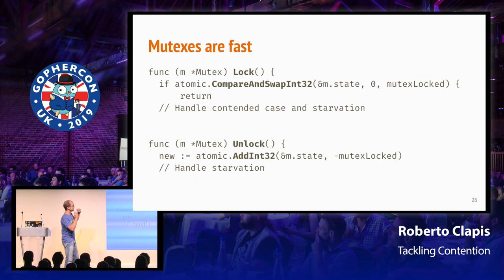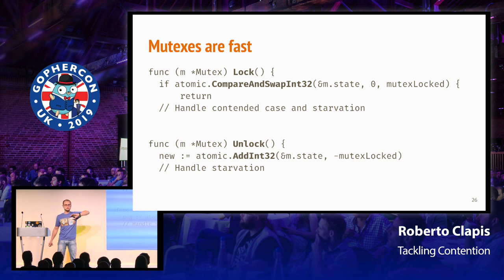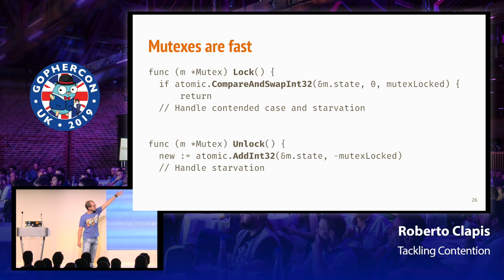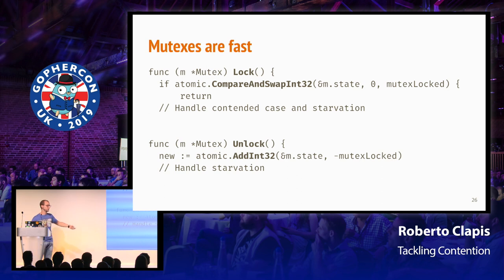Fairness is important, and that's why I always say: do not try to be better than mutexes when you need to lock a state. In a situation without contention, this is the entire code path executed when you lock and unlock a mutex — that's it. Compare and swap, an atomic instruction, roughly 40 cycles, and an add-int-32, still 40 cycles. You can afford those 40 cycles, believe me.